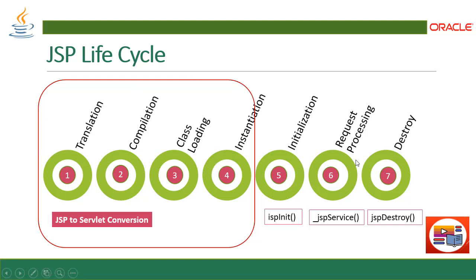All these steps are internally processed, so the programmer doesn't need to program all these steps. All you need to do is make the JSP, invoke it, and deploy it in your server. This automatic deploy, compile, translation, instantiation, initialization, request processing, and destroy — all these steps are internally and automatically processed by the JSP engine.